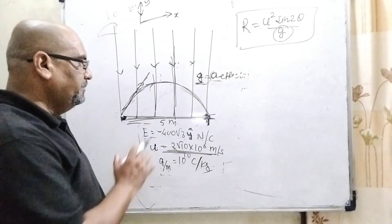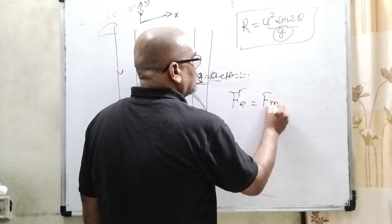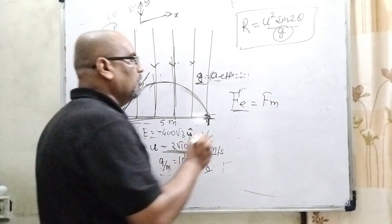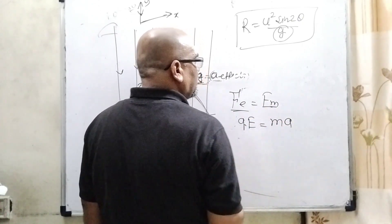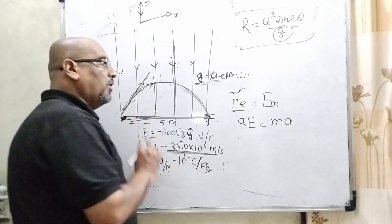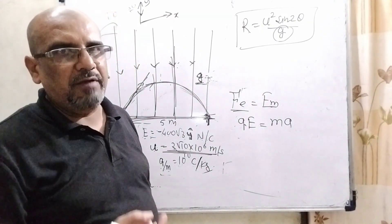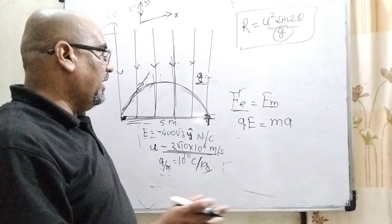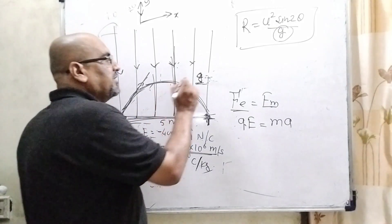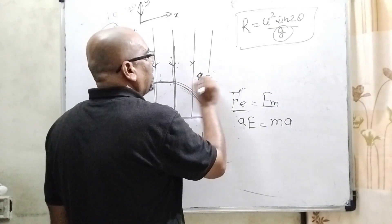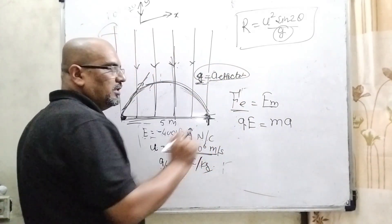We need to know the relation between electric force and mechanical force. Electric force = qE, and mechanical force = mass × acceleration. When a particle is projected against the electric field, the acceleration changes and we call this the effective acceleration. When gravity acts we use g, but here the acceleration is due to the electric field, so we calculate this effective acceleration using qE = ma, giving a_eff = (q/m) × E.